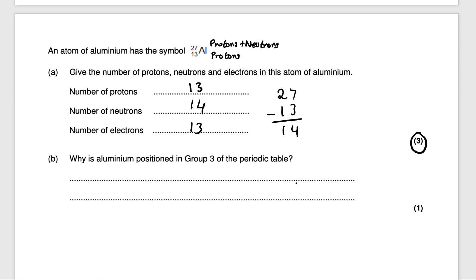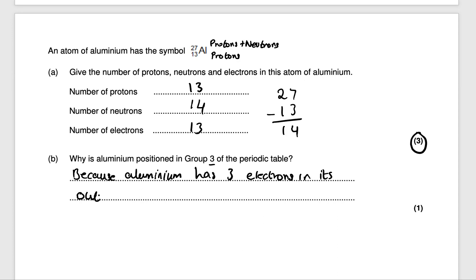That would get you three marks. It also says why is aluminium positioned in group 3 of the periodic table? It's placed in group 3 because it has three electrons in its outer shell. So because aluminium has three electrons in its outer shell, that would get you one mark.